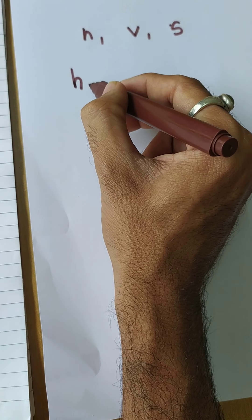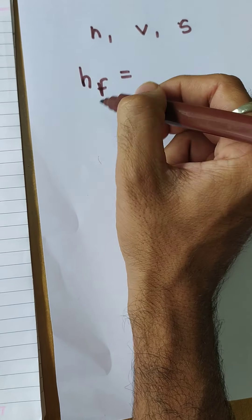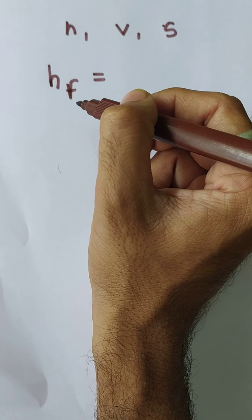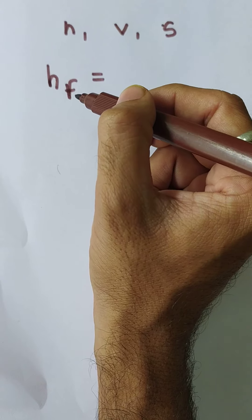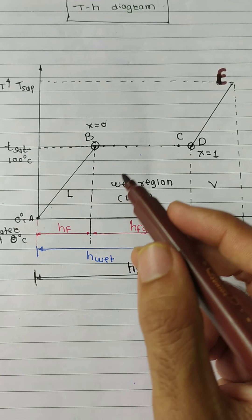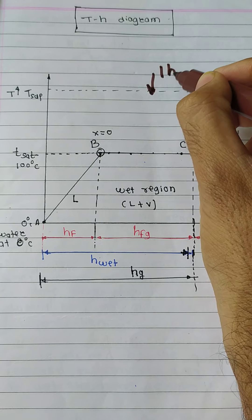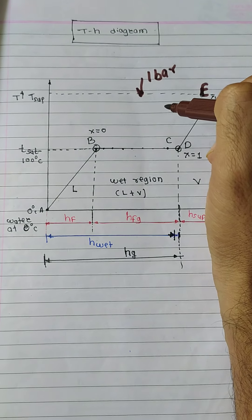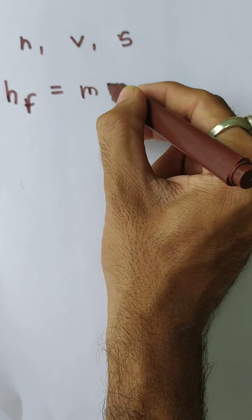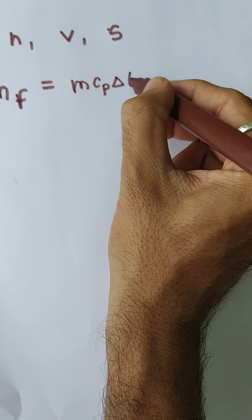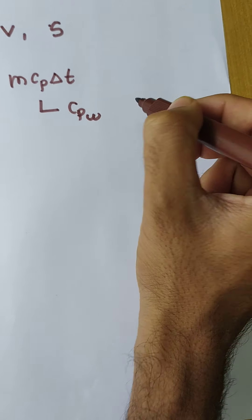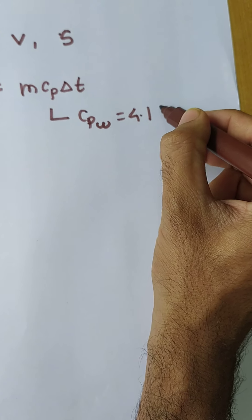First, find out the value of HF. H stands for enthalpy and F stands for fluid. When the suffix is a single word, it is the sensible heat. The sensible heat is carried out under one bar pressure, and we use the basic formula for an isobaric process. The formula is M·CP·ΔT, where CP is the specific heat of water — written as CPW — and its value is 4.187. This value can also be directly obtained from the steam table.